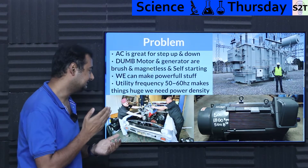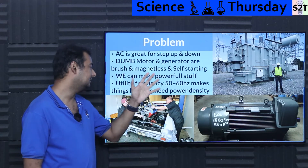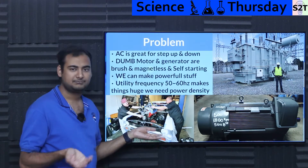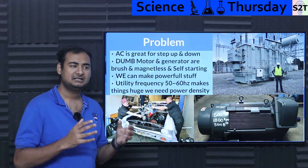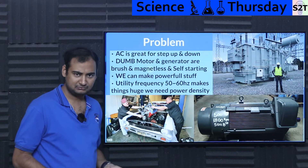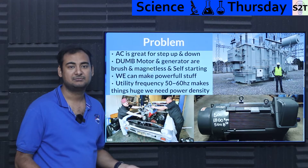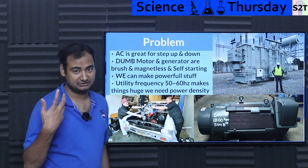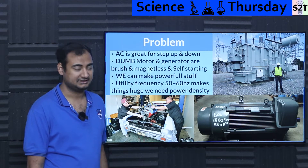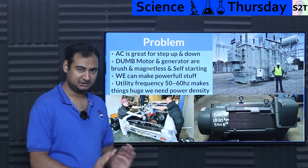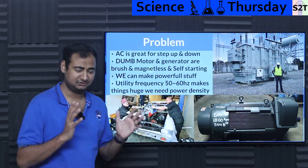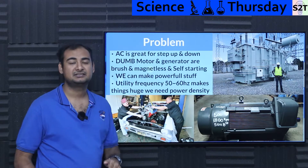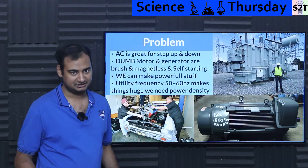There lies the problem: the current utility frequency. The majority of the world uses 50 Hz, some places use 60 Hz. They can make very powerful motors — megawatt-class motors used in expensive industrial applications. It works, but here's the huge caveat: they are not power dense. If you want power density, 50 and 60 Hz is not going to cut it. That's the problem.